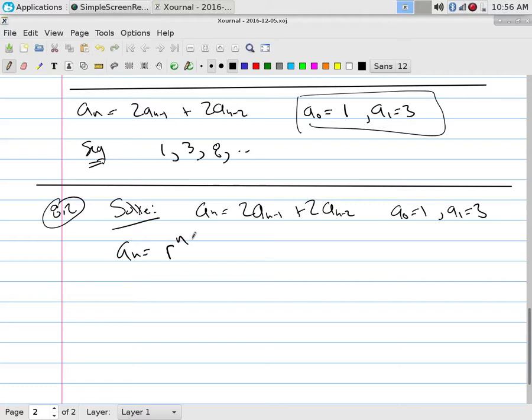All of the linear homogeneous recurrence relations of degree k with constant coefficients have an answer, R to the n. Right? And they have many of those, right, depending on the degree. And then I have to figure out how to put them together. What I have to figure out is what's the R's? How do I get to the R's?